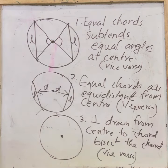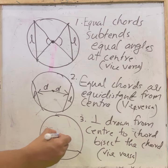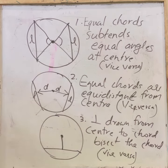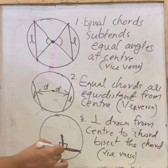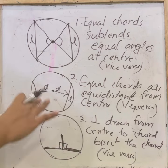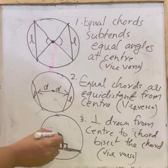Third theorem: a perpendicular drawn from the center to a chord bisects the chord — that is, the chord is equally divided. Vice versa: if the bisector of a chord is perpendicular, then that line passes through the center.